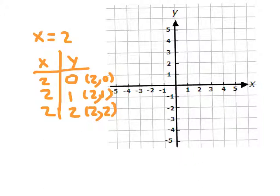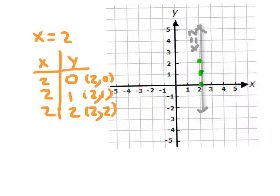After making our function table and listing our ordered pairs, we go ahead and plot those points on our graph. We have (2, 0), (2, 1), and (2, 2). So our graph is going to be a vertical line, x equals 2, through those three points. I've drawn that vertical line through those points, extended in either direction, and labeled it x equals 2.